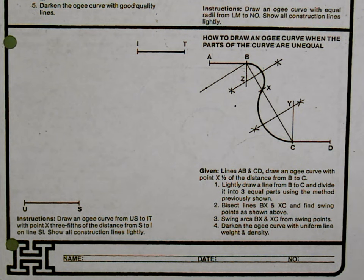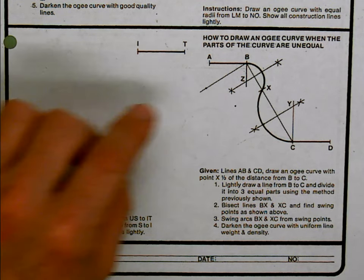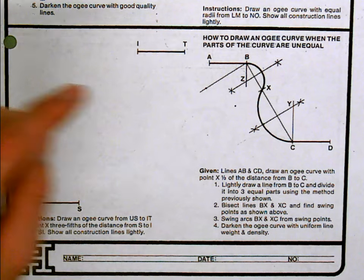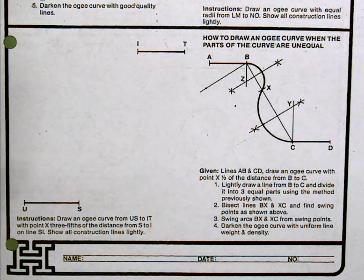This is the bottom of 5-7, and this would be a more advanced OG curve. Rather than each radii being of equal length, they're changing it up on you.